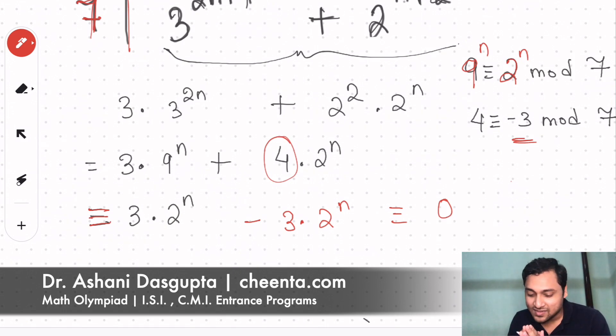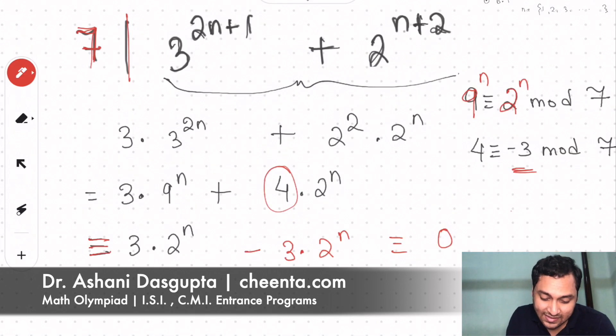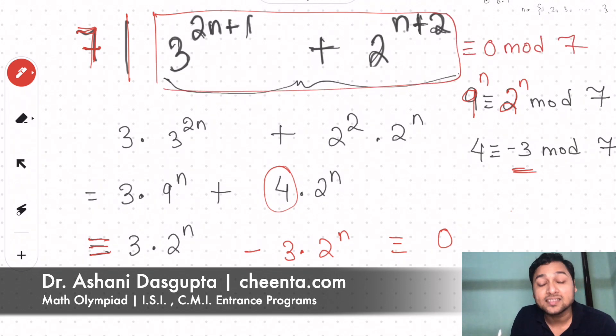Using modular arithmetic, this is just a three-step process. We prove that this particular expression is congruent to 0 mod 7, which means this is divisible by 7.